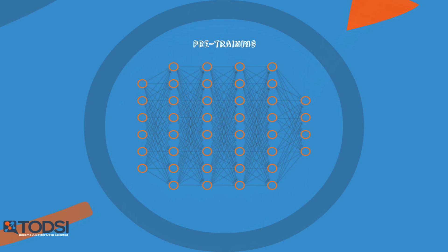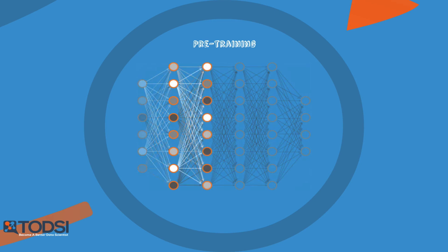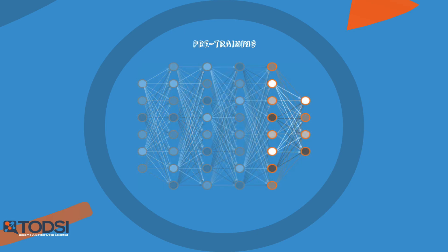A DBN is trained as follows. The first RBM is trained to reconstruct its input as accurately as possible. The hidden layer of the first RBM is treated as the visible layer for the second, and the second RBM is trained using the outputs from the first RBM. This process is repeated until every layer in the network is trained.